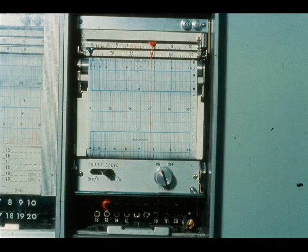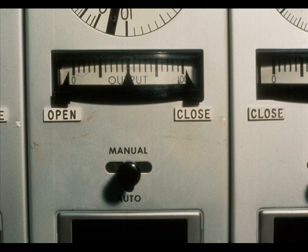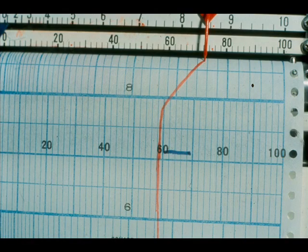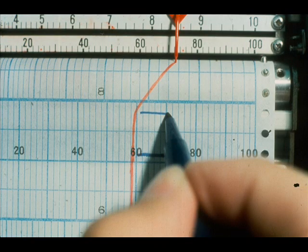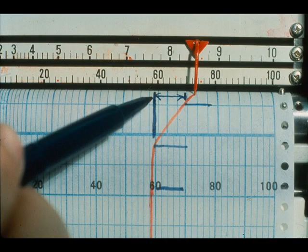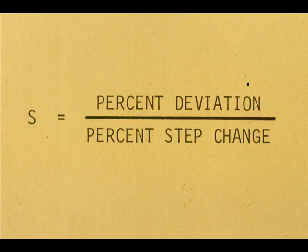Now let's repeat the procedure using live instruments. Line out the process on manual and make the percent step change. Simultaneously start the stopwatch and mark the chart. Measure the time to the open-loop response or the breakpoint of the curve, and mark the chart at the breakpoint. Let the chart run a second time increment equal to the first and mark the chart again. Transfer the slope of the curve up to the scale or read the percent of deviation off the chart, then divide the percent deviation by the percent step change to get the slope S.